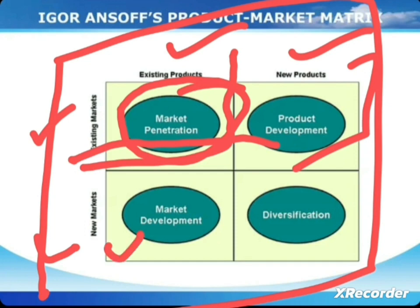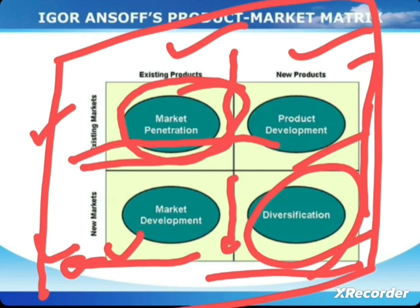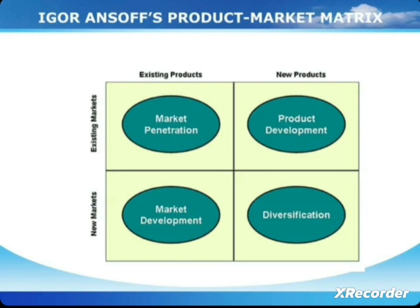The third quadrant is market development. Here the company has the same — existing — product and goes into a new market with it. When there is a new market, it is market development. When there is a new product, it is product development. When a company goes with a new product into a new market, it is diversification — they are entirely new in both product and market.